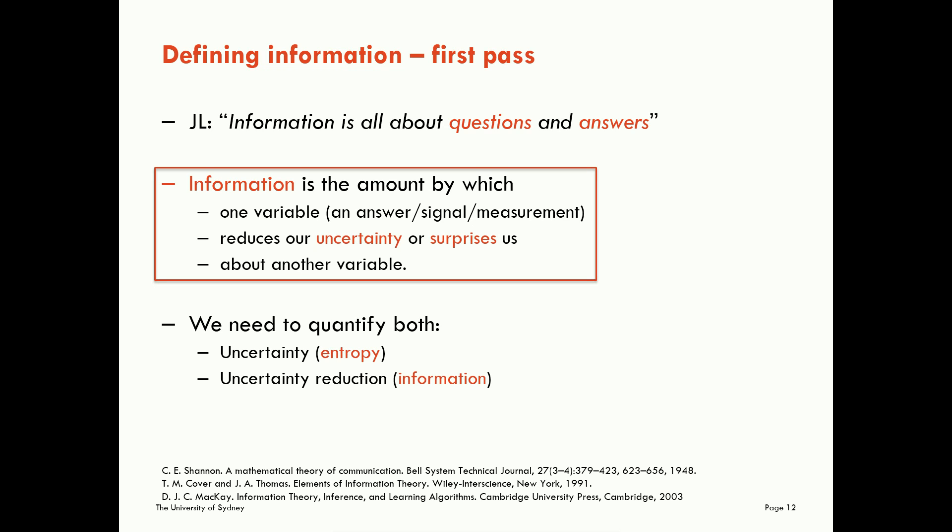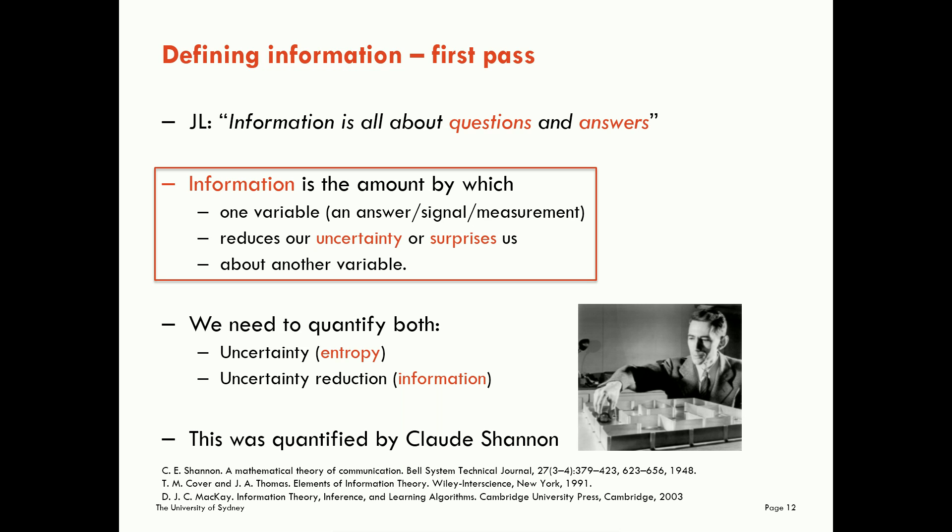So you'll see here that we need to quantify both uncertainty as well as uncertainty reduction. Here we're going to quantify uncertainty using entropy, our fundamental measure of information theory. And uncertainty reduction is what we will call information. So this is why I refer to entropy and information, uncertainty and uncertainty reduction, as two sides of the same coin. And you'll hear me saying that much more often. Claude Shannon, the founder of information theory, quantified these concepts and made such quantitative analysis possible.